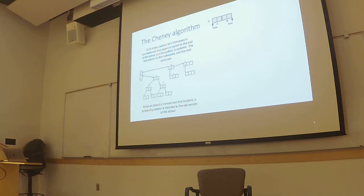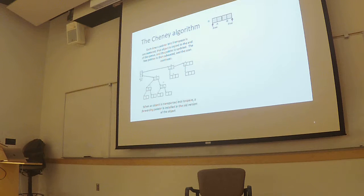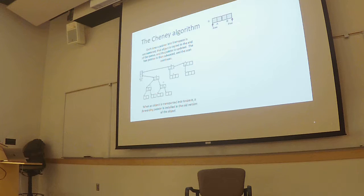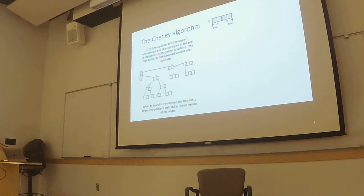Cheney's algorithm is a breadth-first traversal out from the root set. There are two pointers: free and scan. Both start at the beginning of the to-space — the space you're copying stuff to. You take the things in the root set and copy them over. Every time you copy them over, you put it at the current free pointer and then increment the free pointer by however big the thing was. So you copy over A, increment, copy over B, increment.